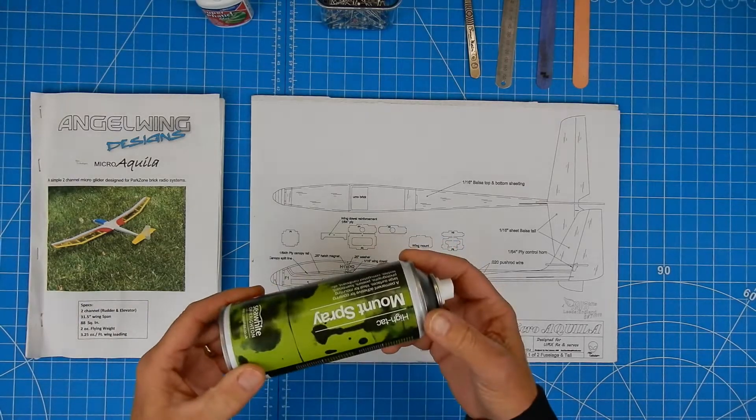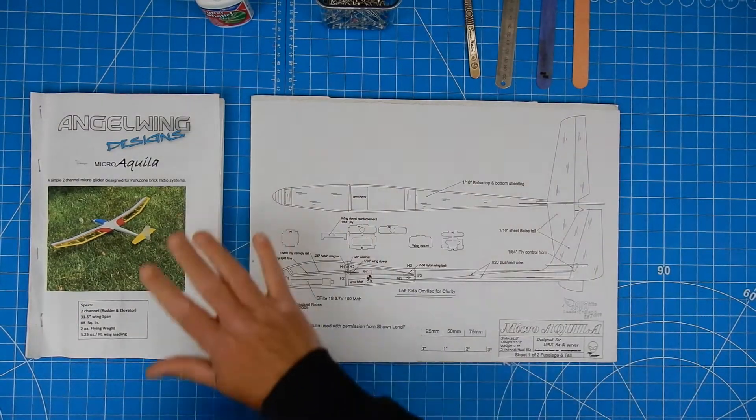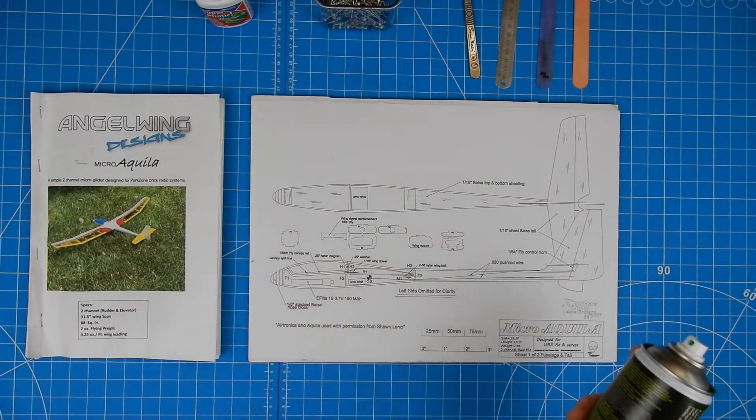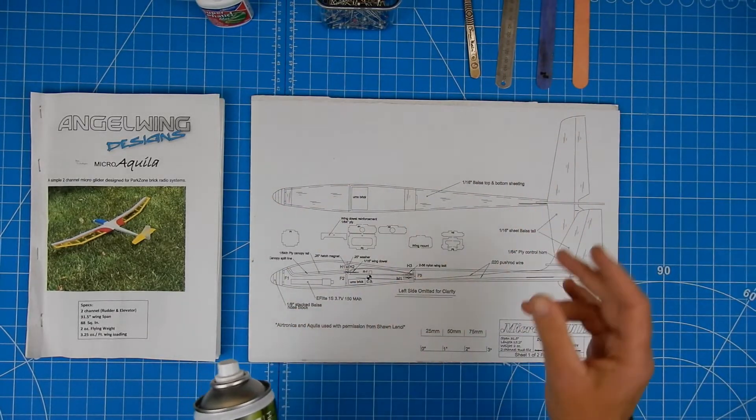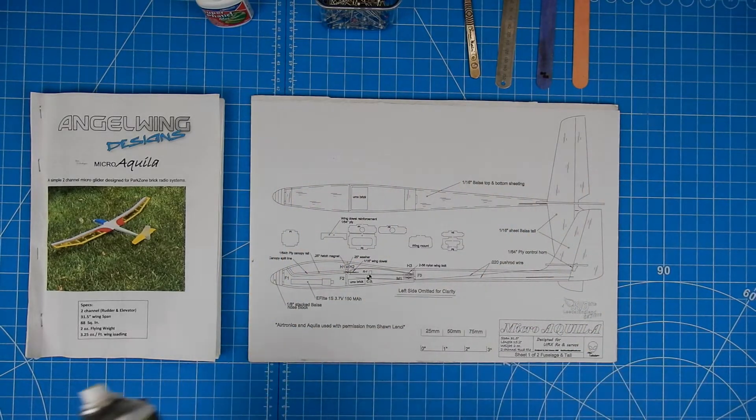And all I do is I give it a spray with mount spray and I'll give it a good coating. Good tip, do it outside because you do get some overspray with this and it can make the place tacky. Just give it about 15 seconds to just vapour off and then the plan goes down lovely.